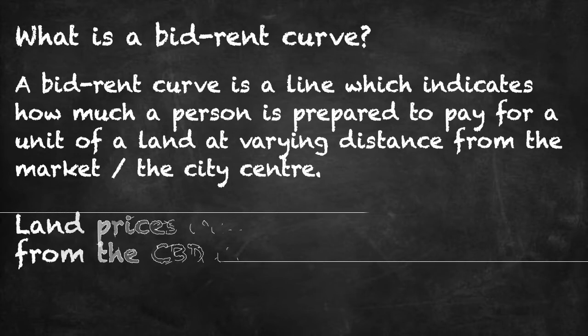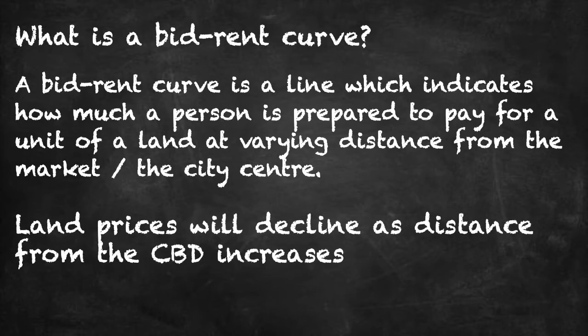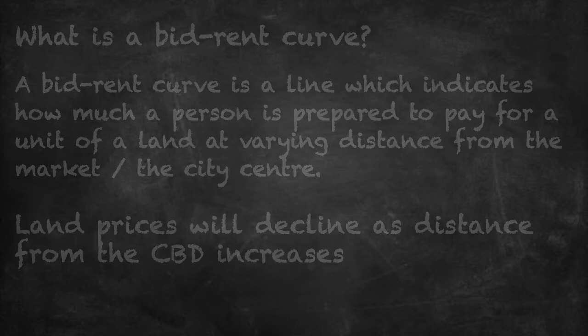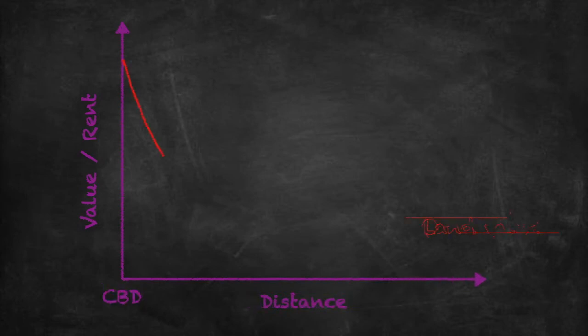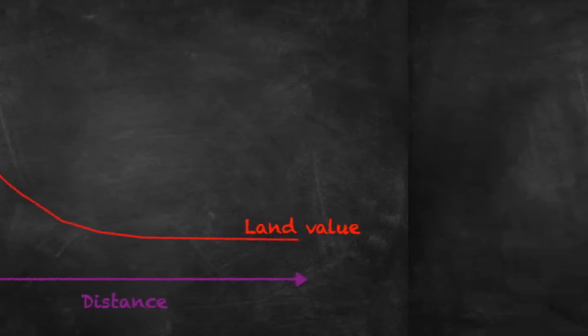As a general rule, land prices will decline as distance from the CBD increases. We can illustrate this in a simple graphic: on the y-axis we have the rent value, and on the x-axis we have the distance. What we then get is a falling line of land value as distance from the CBD increases.